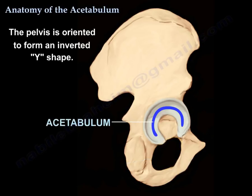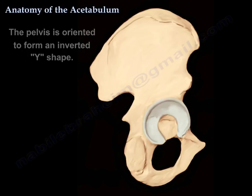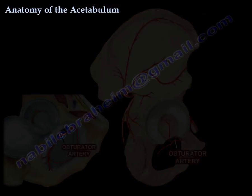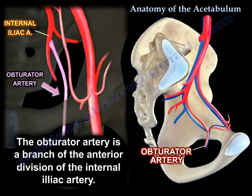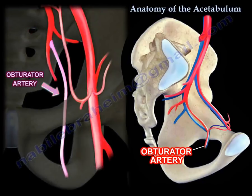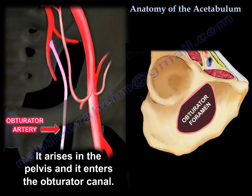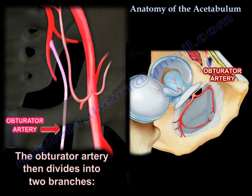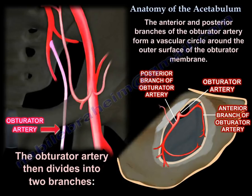The pelvis is oriented to form an inverted Y shape. Regarding important vascular anatomy: the obturator artery is a branch of the anterior division of the internal iliac artery. It arises in the pelvis, enters the obturator canal, and divides into two branches — the anterior and the posterior branch — which form a vascular circle around the outer surface of the obturator membrane.